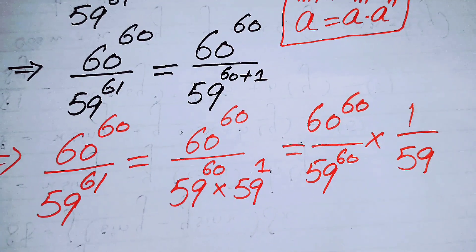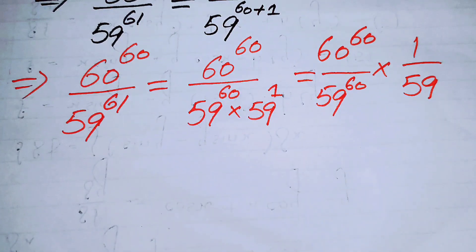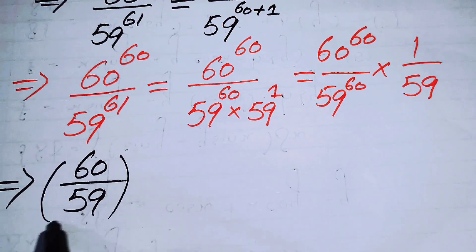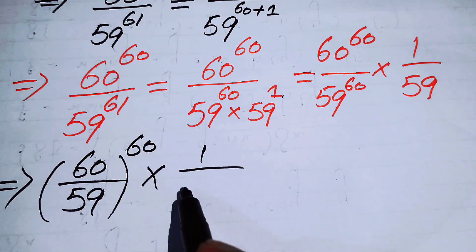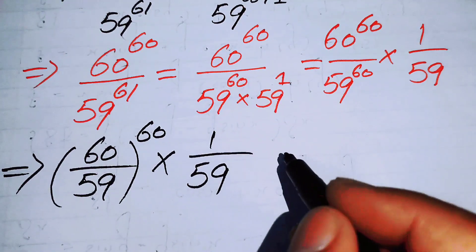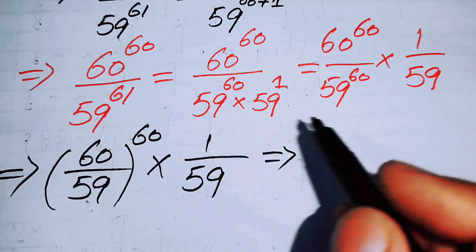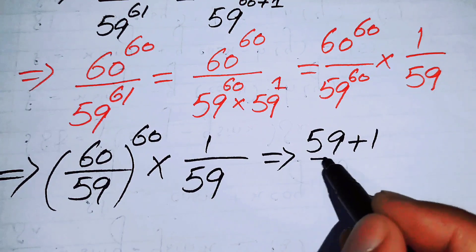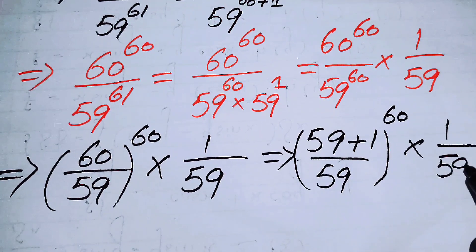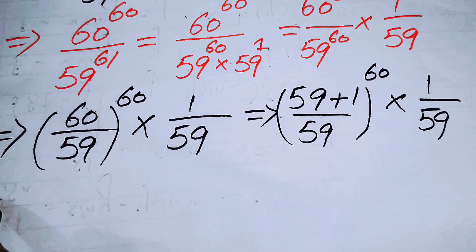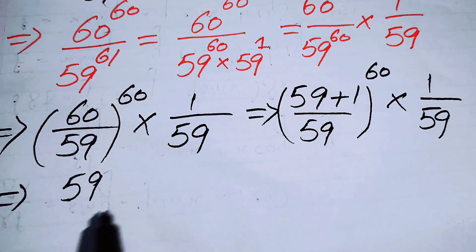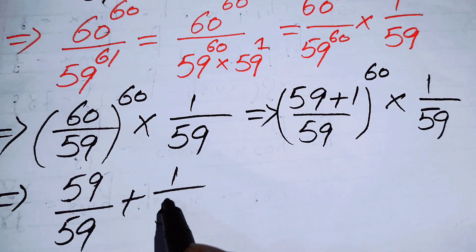Combining the exponents of the two terms with power 60, I can write (60/59)^60 × (1/59). Now I rewrite 60/59 by expressing 60 as 59 + 1, giving (59 + 1)/59, which splits as 59/59 + 1/59, that is (1 + 1/59). So the expression becomes (1 + 1/59)^60 × (1/59).